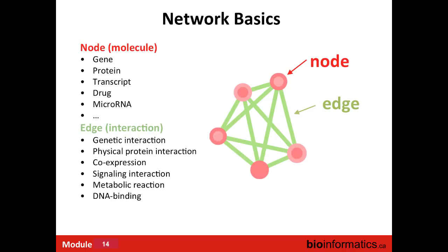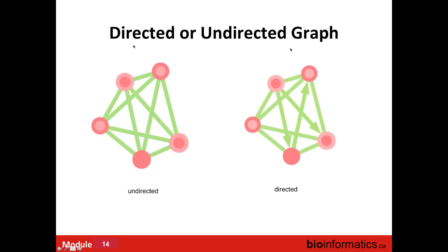Key terminology: a node is the circle representing the element — a gene, protein, or pathway. An edge is the line representing the interaction or relationship between two nodes. A graph is another word for network. Undirected graphs have edges with no arrows, while directed graphs use arrows — for example, to indicate gene A activates gene B.